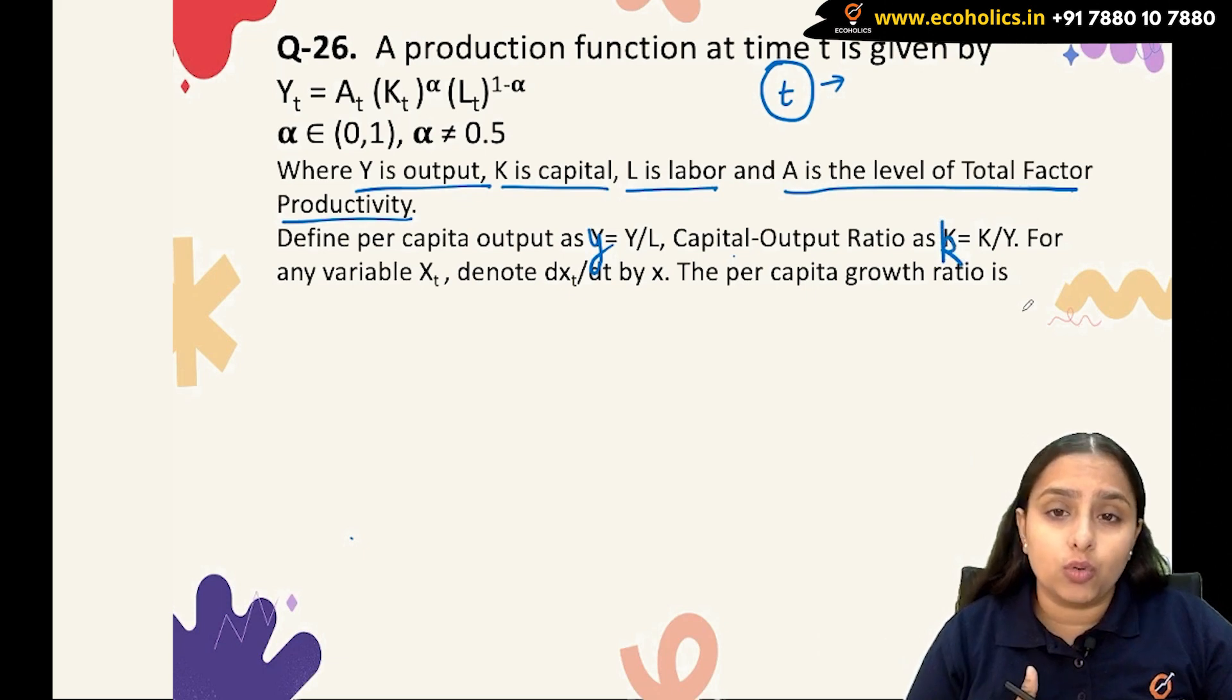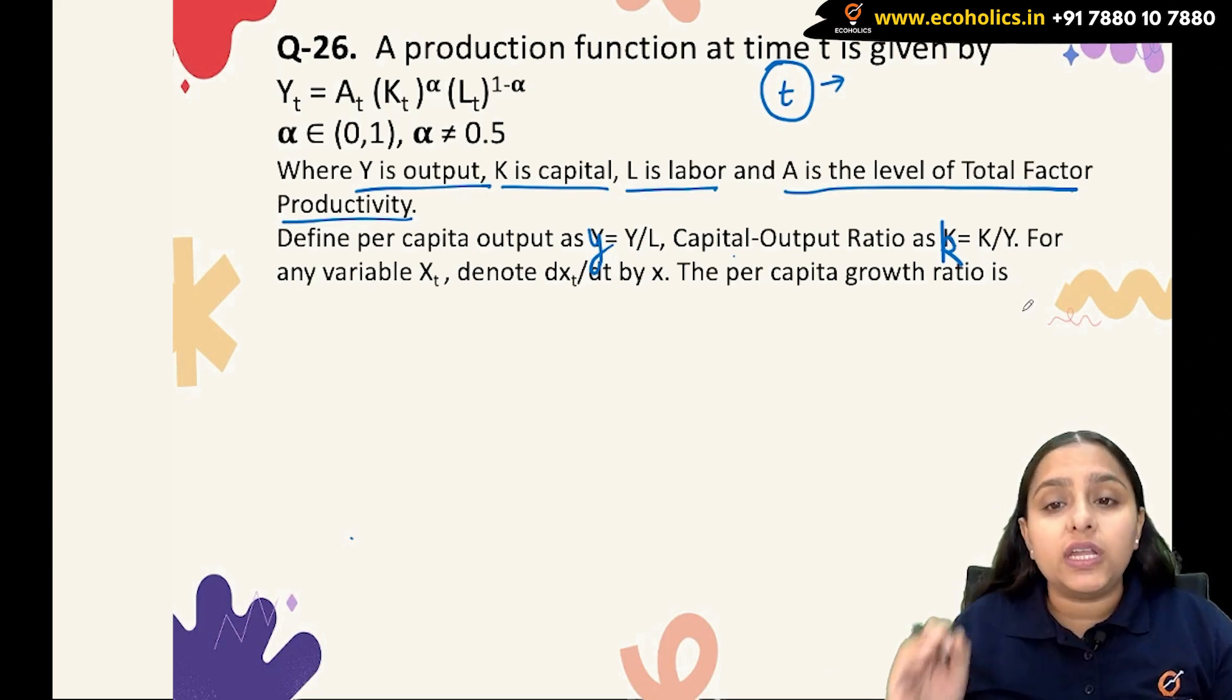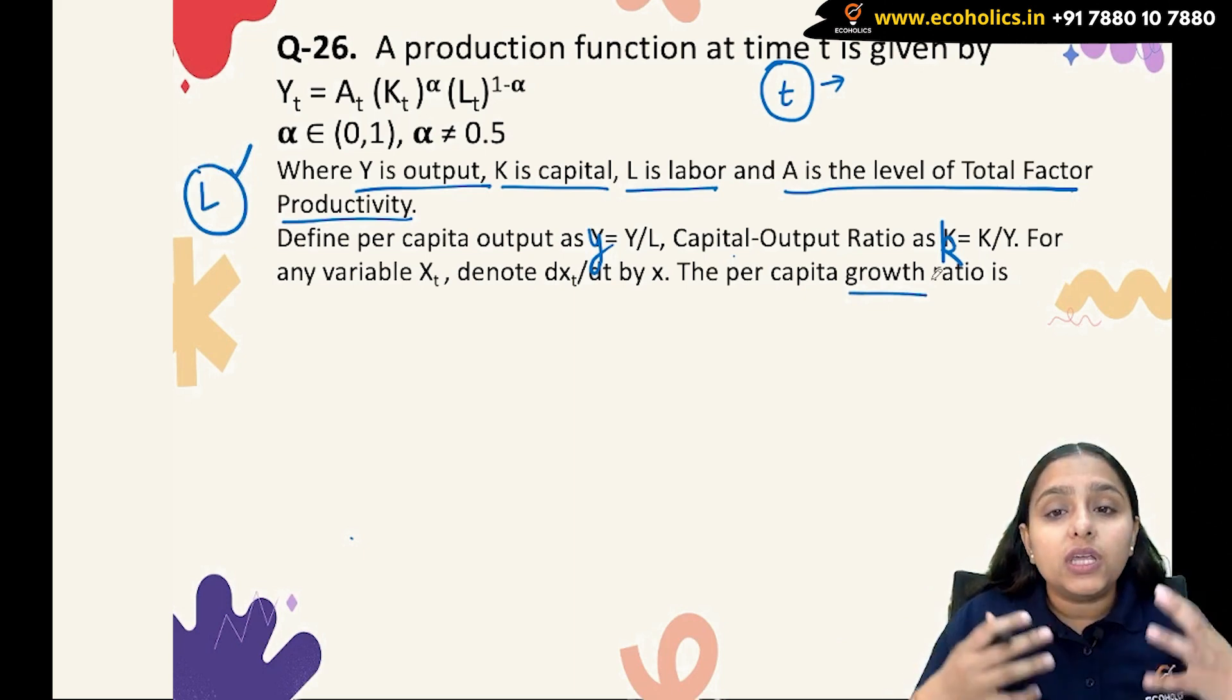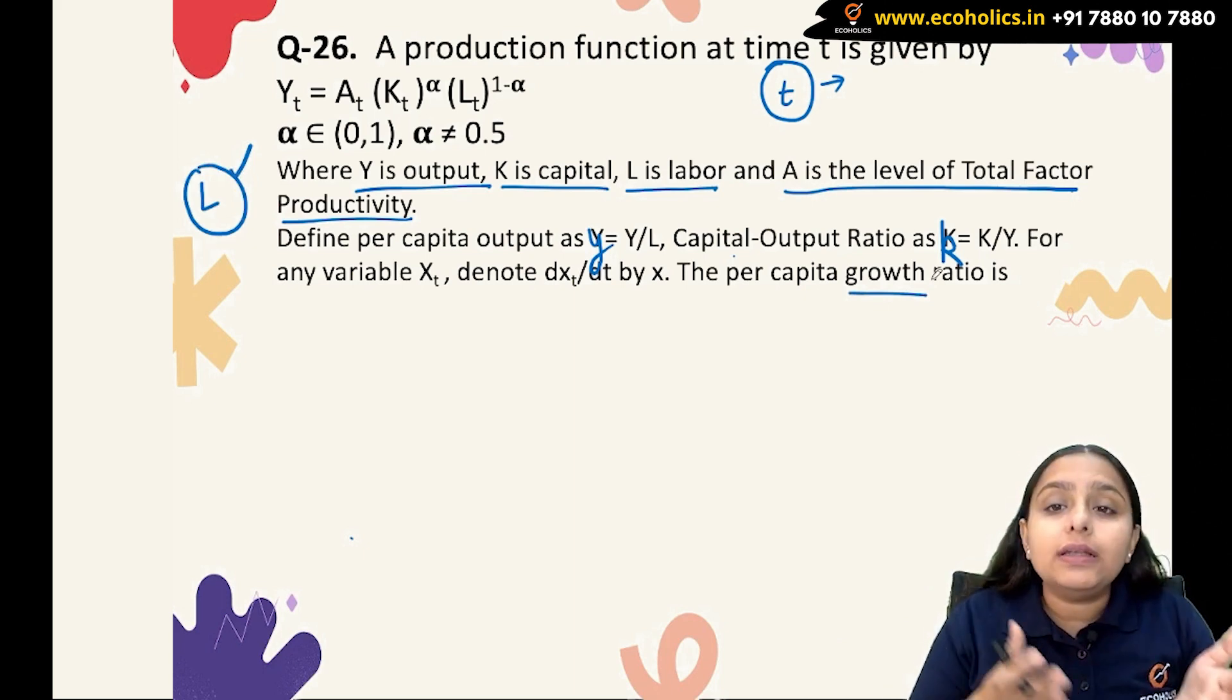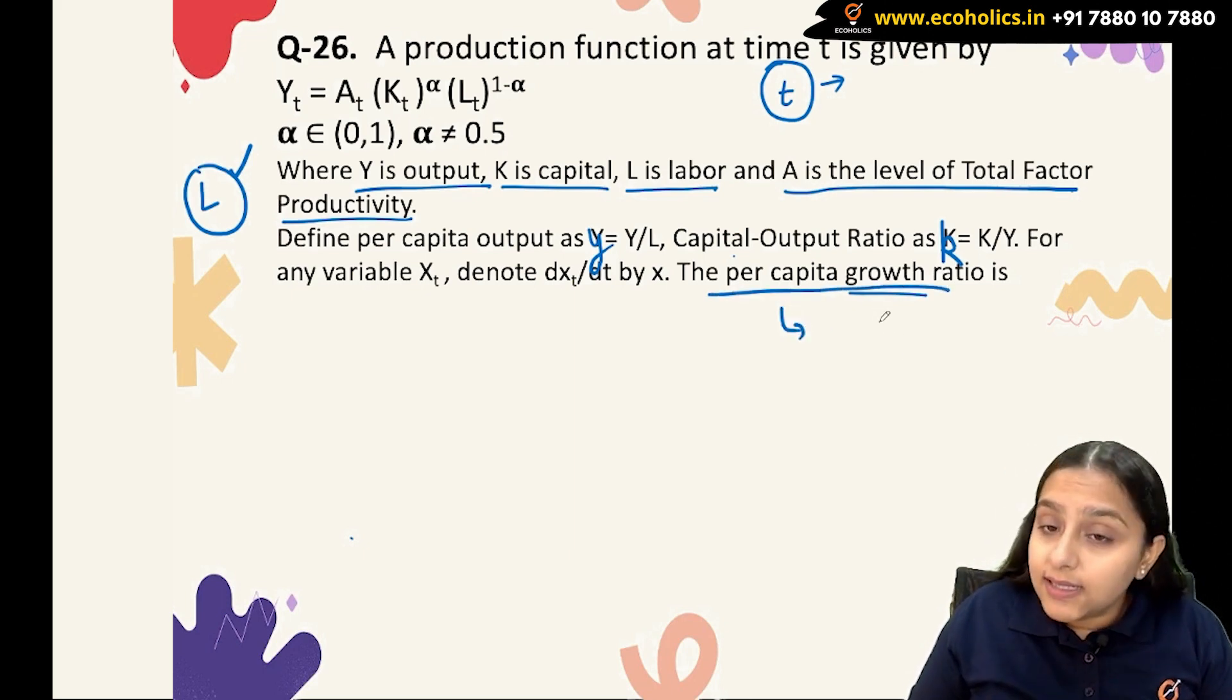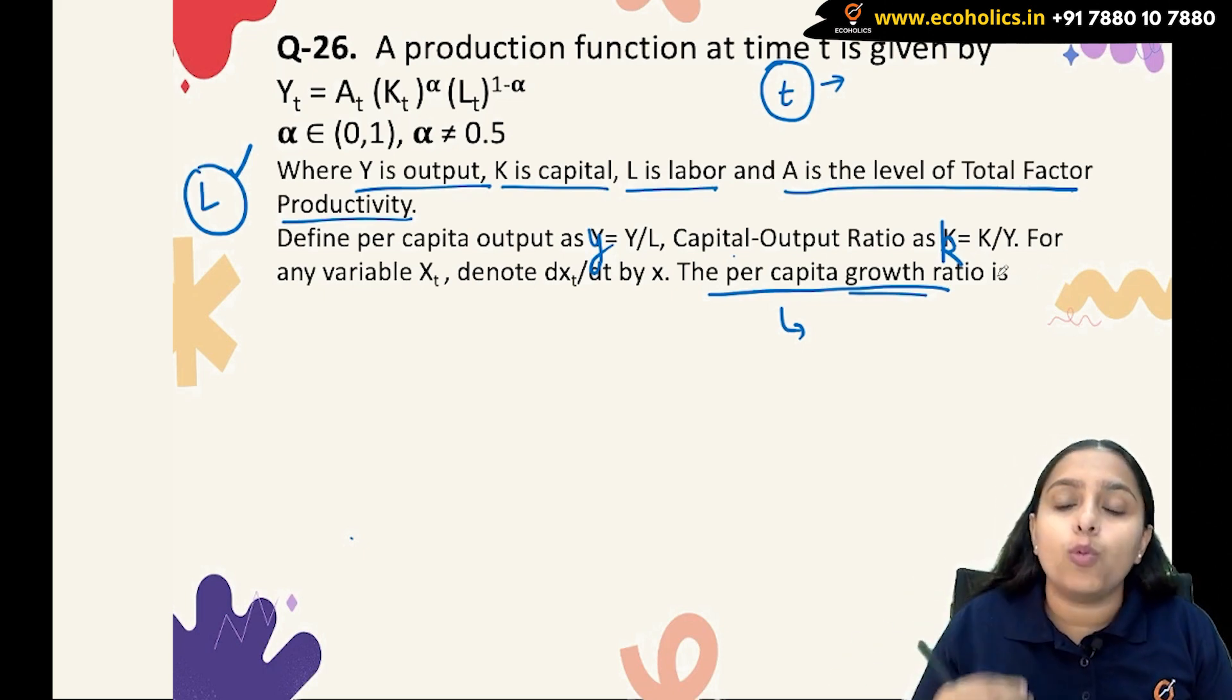How do we find per capita growth ratio? What does it actually mean? Per capita basically means for every individual. Here we have L individuals, so I have to find the growth for each and every individual in terms of each and every individual.